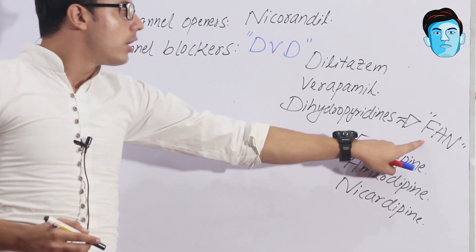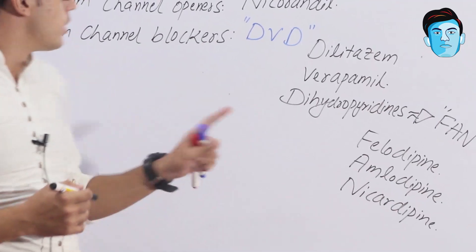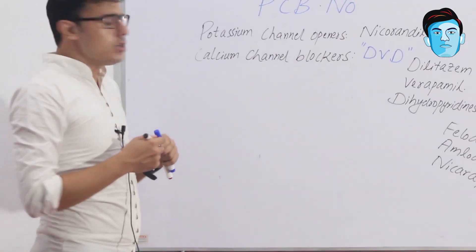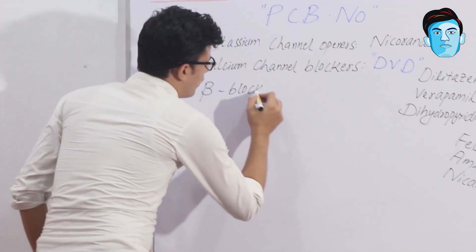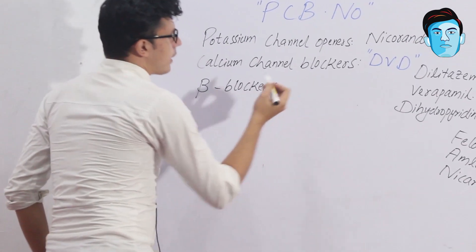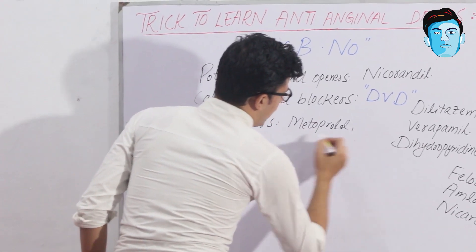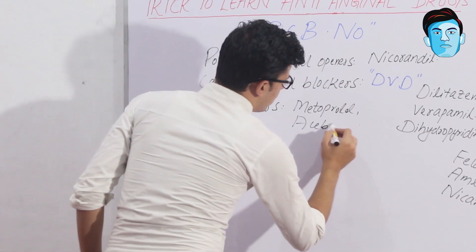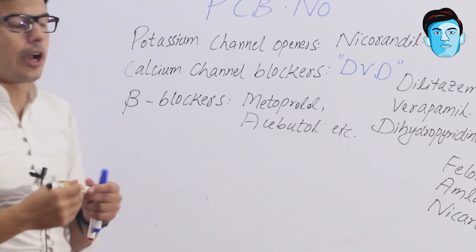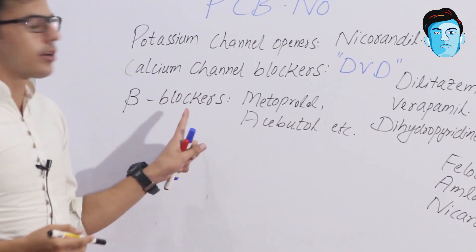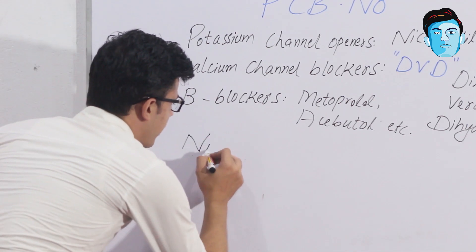B stands for Beta Blockers, which include Metoprolol, Acebutolol, and Atenolol, etc. We already have a major lecture on beta blockers. Now let's talk about N, where N stands for Nitrates.